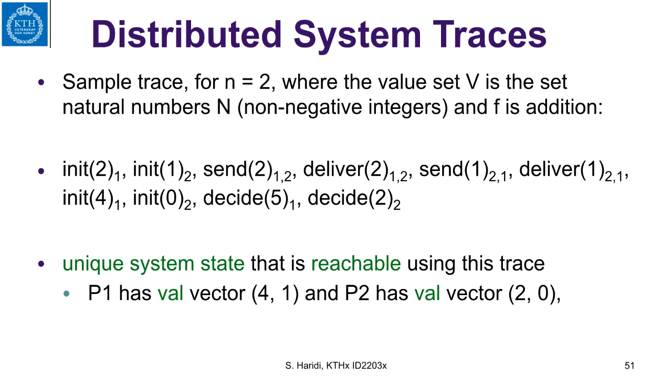So now let us look to a sample trace, and then we are going to go through the sample trace in detail. So we'll have a sample trace where n is 2, it means that we have two processes and two channels, and where the value set v could be any natural number, that is to say, non-negative integers. And our function that computes in this local variable val, which is a vector, this function is an addition, just adding the values in the vector.